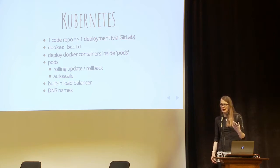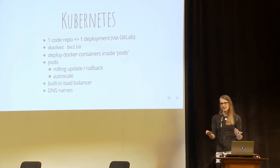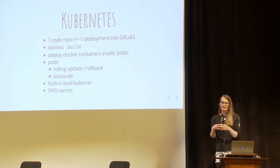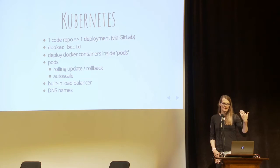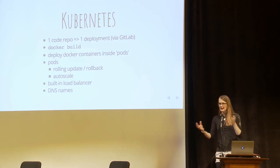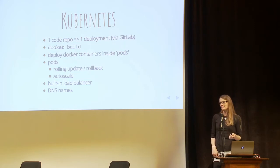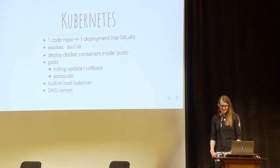The way this works is you have one code repo, and that will automatically make a deployment for you into a Kubernetes cluster — through a simple Dockerfile. It builds it for you, deploys the Docker containers into pods, does a rolling update, rollback, monitoring, and auto-scaling as your scale goes up. It has built-in load balancers, and it will even give you semantically useful DNS names.